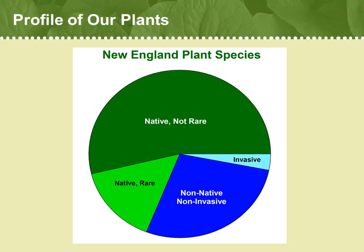We hear a lot about invasive species these days, and we'll explore that concept in a lot more detail in the future. For now, it's important to point out that the majority — 69% — of New England's species are native. About one-fifth of our native species are considered rare, and we'll get into that issue in future lessons too.